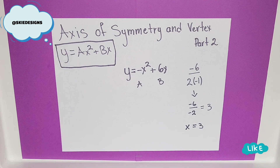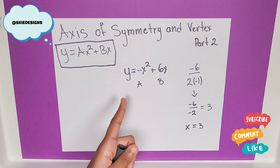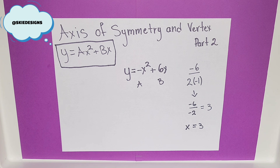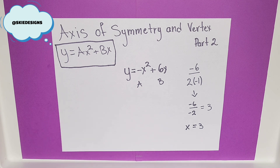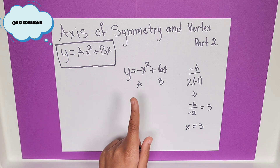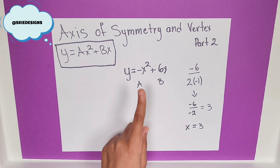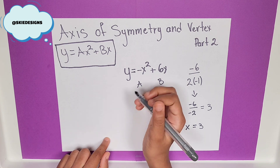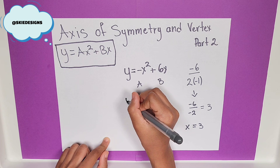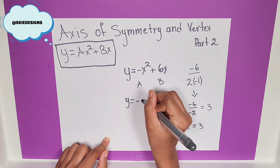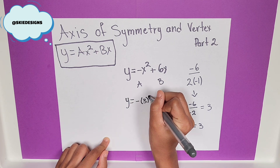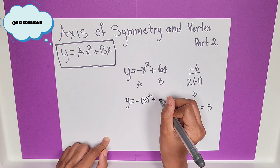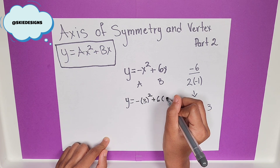Now, let's look for the full vertex — we need to get the y. As I said in the last video, the vertex is considered h and k, or x and y. We already have the x, so the easiest way to do this is to substitute the x, wherever you see it in the equation, for the number that we just got, or 3. So, here we have y is equal to negative 3 squared plus 6 times 3.